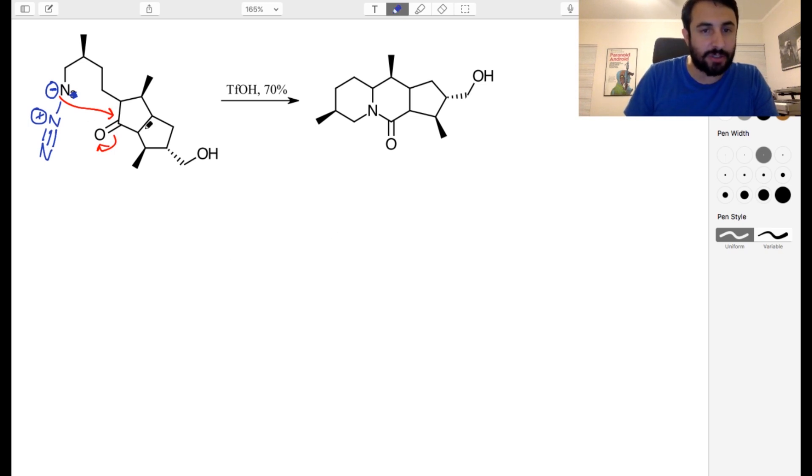And in doing so we are making a seven-membered ring, right? We're making this is one, two, three, four, five, six, seven. So let's go ahead and draw that seven-membered ring.